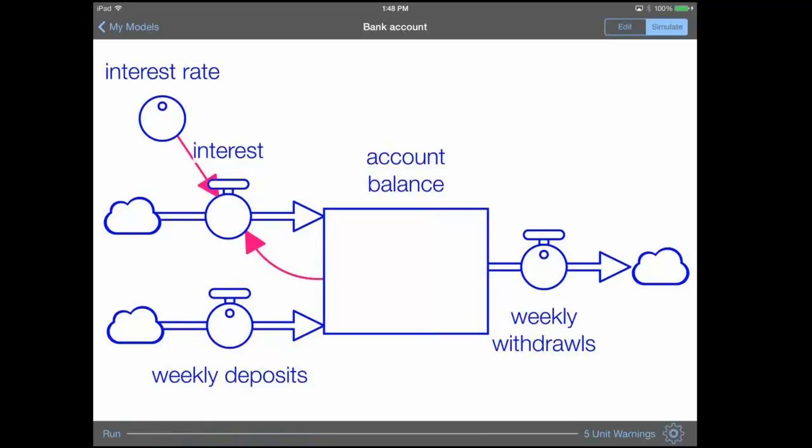Here we've got a simple model of a bank account, and what we can do is change the interest rate, and as we change the interest rate, the simulation is automatically rerunning in the background, showing us the effects of the change of that constant on values within the simulation.